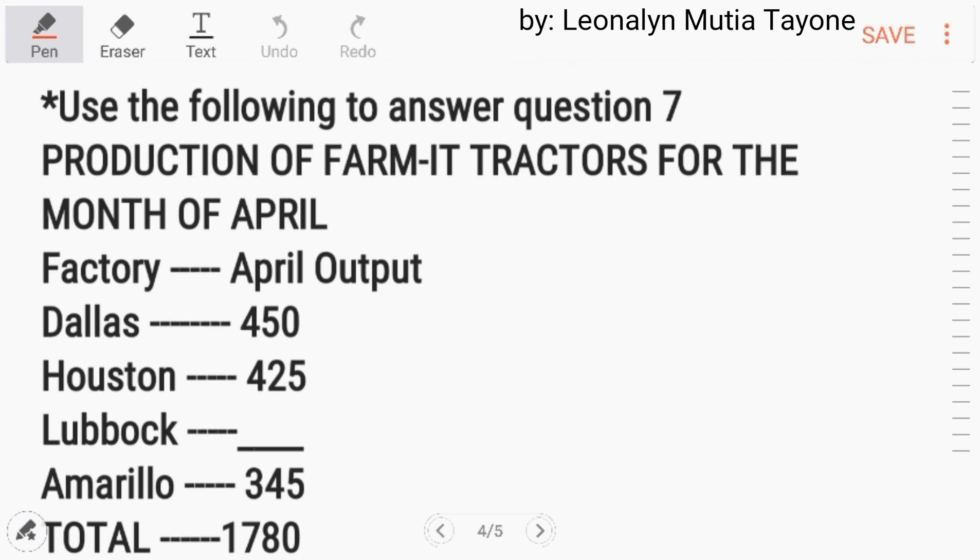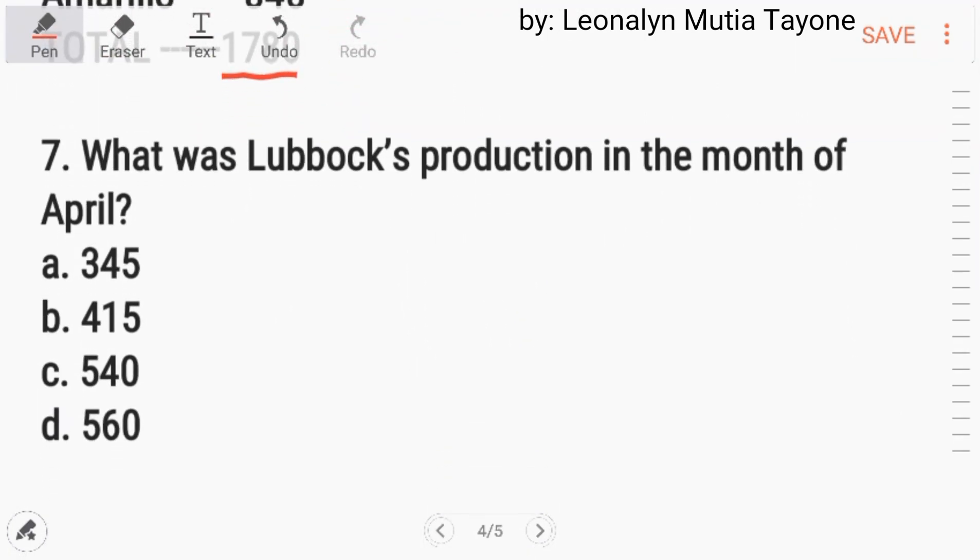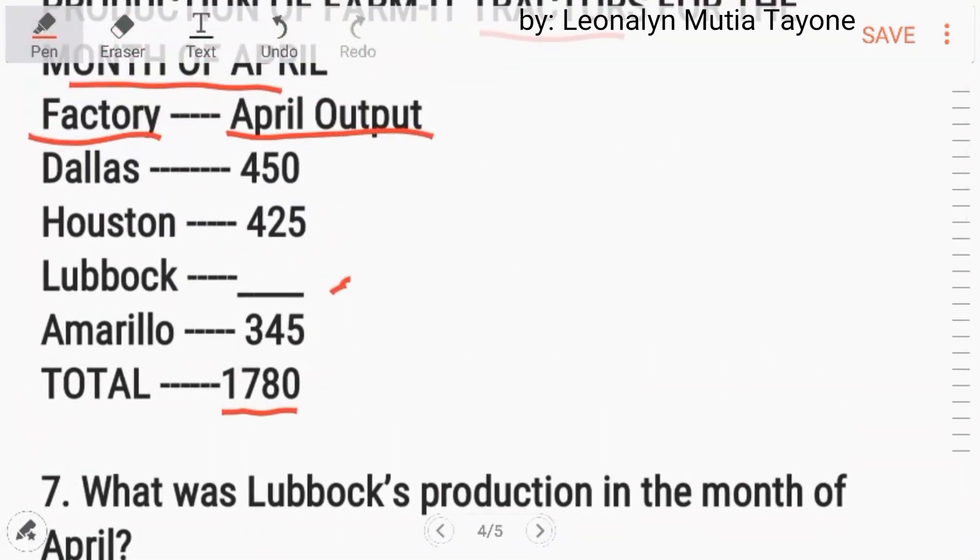Use the following to answer question number 7. Then, for the month of April, itong tractors, ito yung factory versus sa April na output. Dallas 450, Houston 425, at saka dito wala. Amarillo 345. Ang total ay 1,780. The question is, what was Lubuk's production in the month of April? So, ito ang tanong.